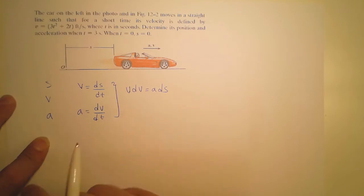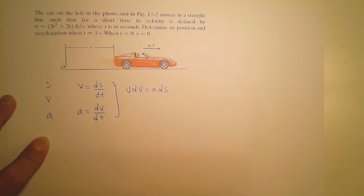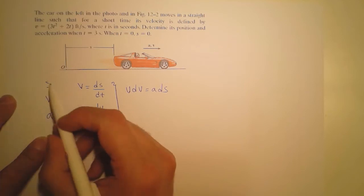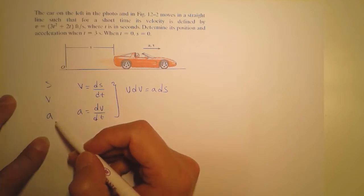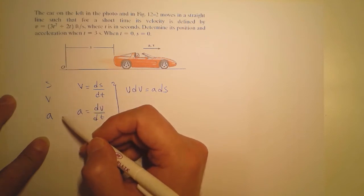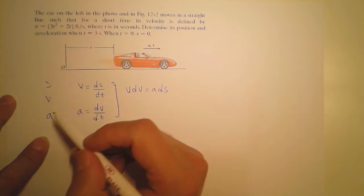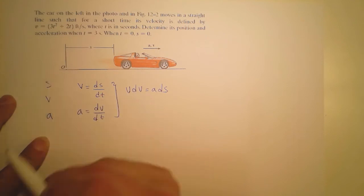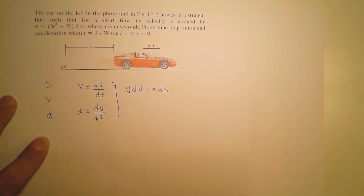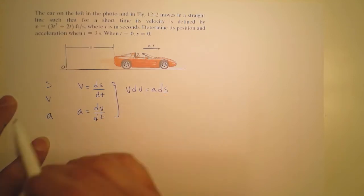For position, velocity, and acceleration: if we are going down the hierarchy we differentiate; if we are going up we integrate. In this example, we are given the velocity equation of the car as a function of time.